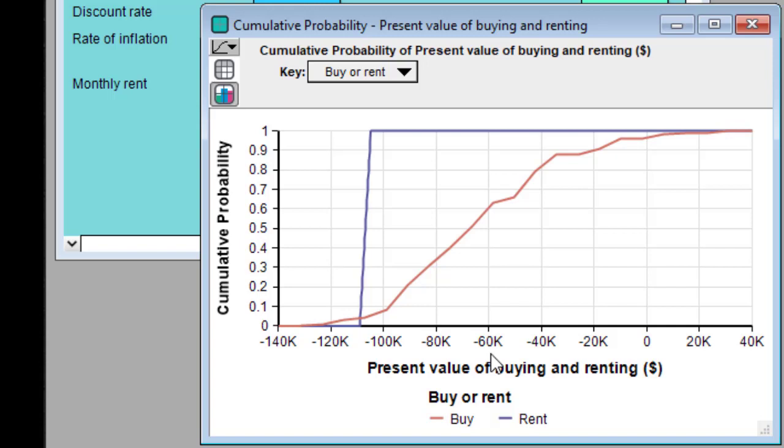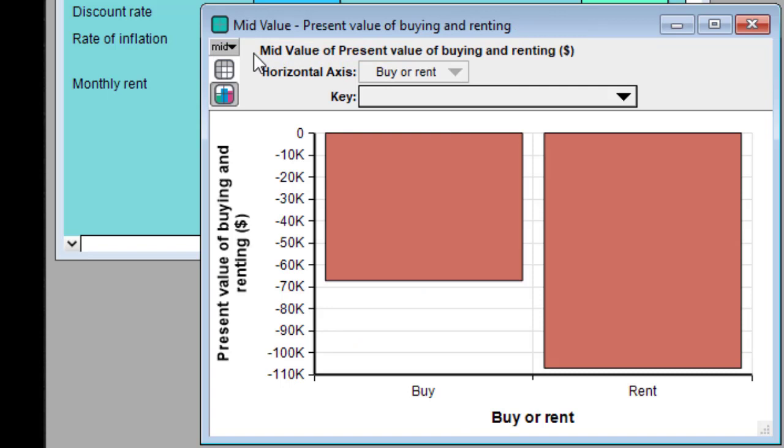Sometimes you might want to see a result expressed as a single number. When you select mid-value, Analytica computes the deterministic value by fixing all of the input probability distributions at their median values. So this computation basically computes the values by ignoring all the uncertainty. This is the only mode on the uncertainty view pop-up that doesn't take uncertainty into account.